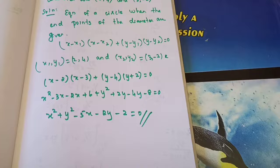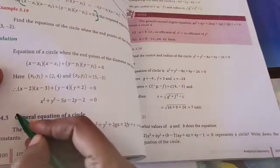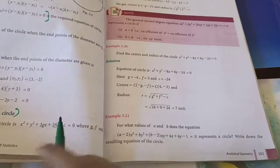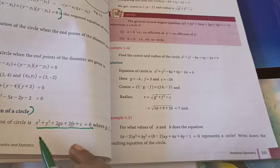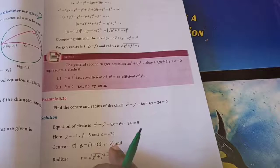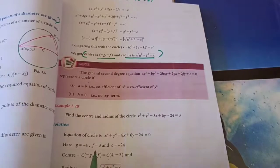Next we are going to learn the general equation of a circle. Put the next heading: general equation of a circle. The general equation is x square plus y square plus 2gx plus 2fy plus c equals 0, where G, F, and C are constants. The center is minus g comma minus f, and the radius is square root of g square plus f square minus c.